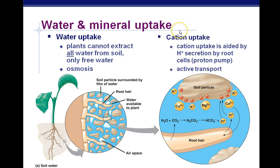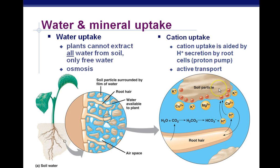How do plants take up cations — positively charged ions? This mechanism relies on hydrogen ions, or protons, and it's a type of active transport. Plants pump the protons out. The protons have a positive charge and bind to soil particles that are negatively charged. When hydrogen ions bind to negatively charged soil particles, it replaces other positively charged ions like calcium that were attached. The calcium ions are then freed up and can diffuse into the root hairs.